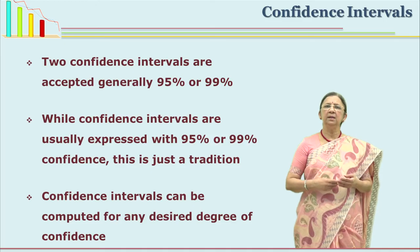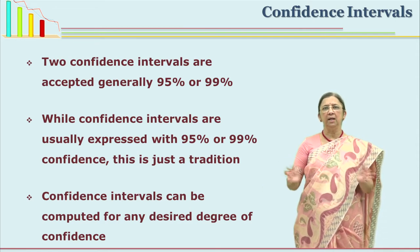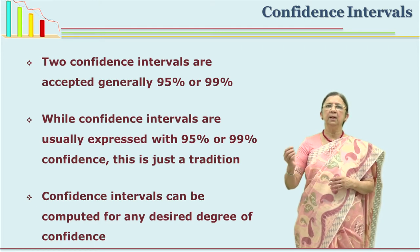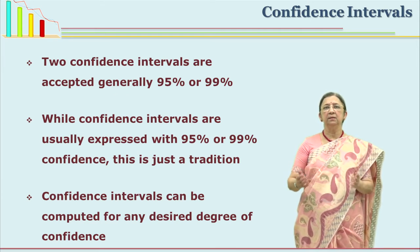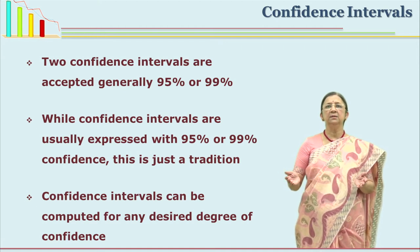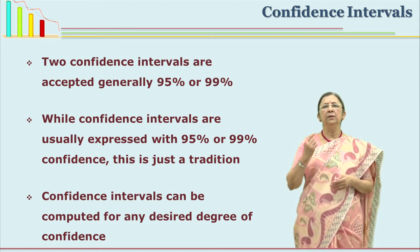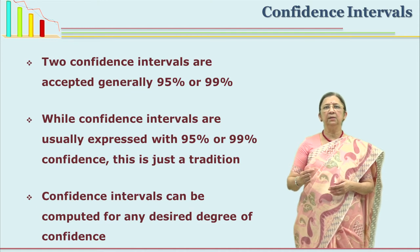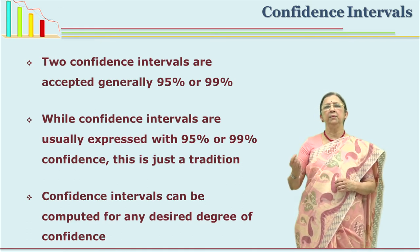When I say I am 95 percent confident, it means if I conduct the experiment or survey 100 times with different samples, 95 percent of the time I will get the same results, and 5 percent may be by chance. 99 percent confidence level means if I conduct this survey 100 times, I will have 100 means, and I am sure that 99 percent of the time I will get similar results — only 1 percent is by chance. When I use the word significant, I am not attributing it to chance — 99 percent of the time I am confident we will get the same results.